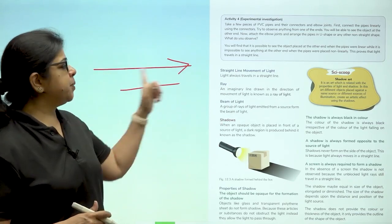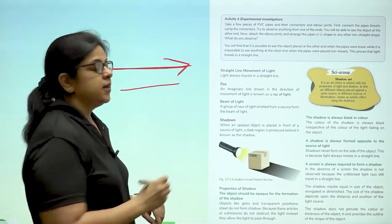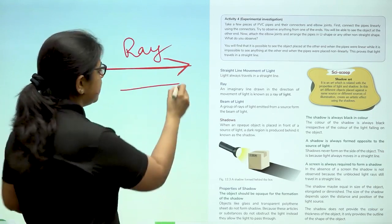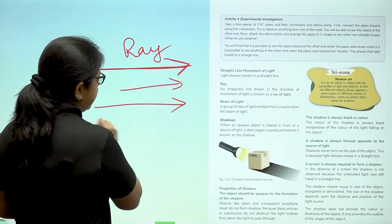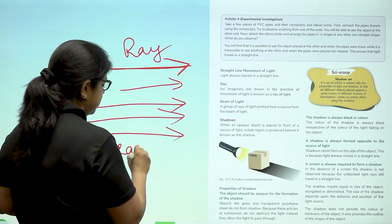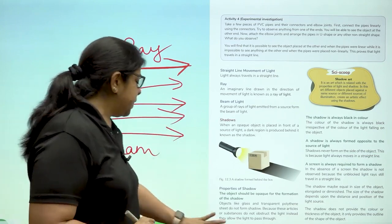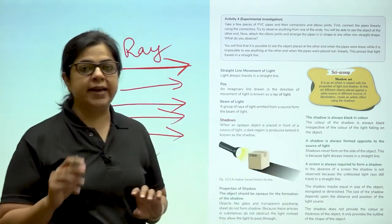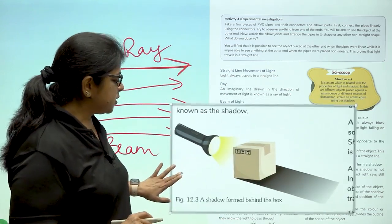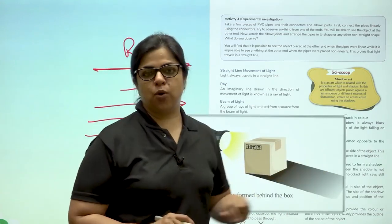So we have understood that light travels in a straight line. This picture that I have drawn here, a straight line with an arrowhead, this is known as a ray of light. Now if I draw many rays like this, what does it become? It becomes a beam of light. Now when this beam of light will hit an object that is opaque, what is going to happen? As you can see in this picture, a shadow will be formed.